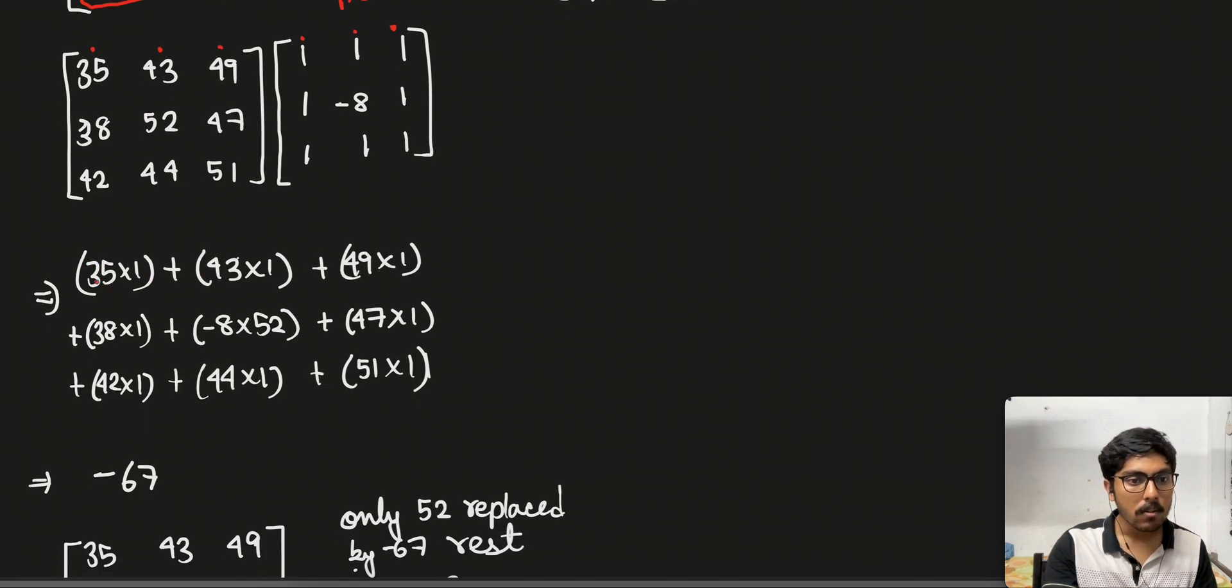We will do like this: we see 35 into 1, 43 into 1, like this, and then in the middle minus 8 into 52 for this.